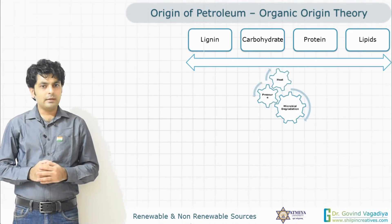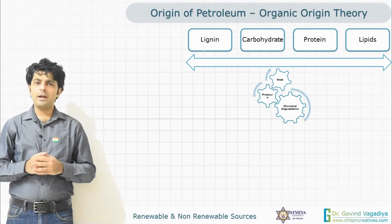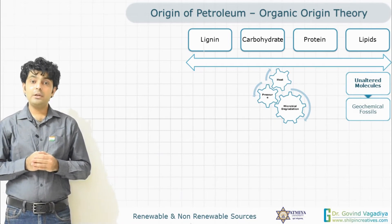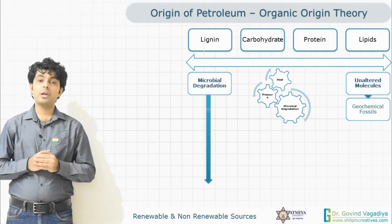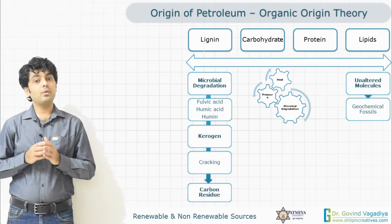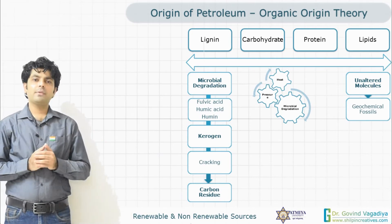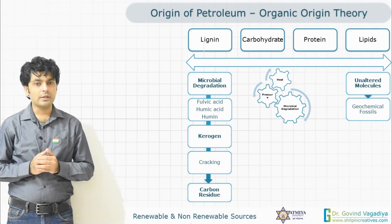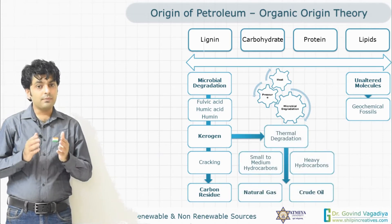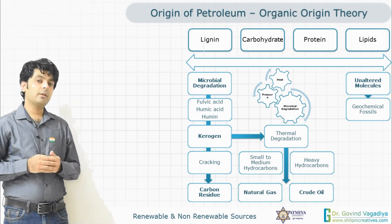In this diagram, we can see that lipids, proteins, and carbohydrates — constituents of animals and plants — were converted into geological and geochemical fossils if they remained unaltered. If they were not unaltered and microbial degradation took place, they were first converted into kerogen. This step is called diagenesis.